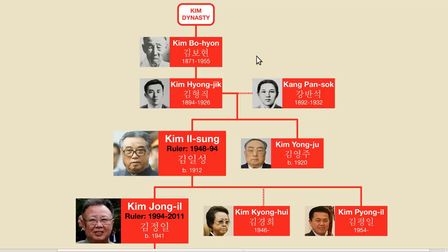The first thing you need to know is that Kim is the family name. In Korea, the family name comes first, and this is a bit confusing for English speakers since we usually put our family name as our last name.